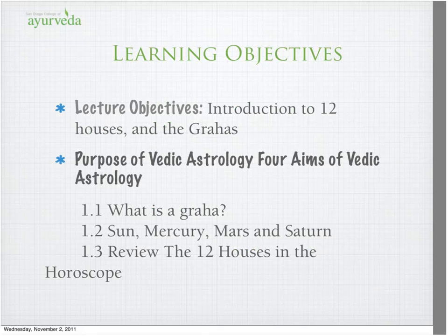Our learning objectives today are introducing some of the planets — the grahas — not all of them. I'm going to slow down just a little so that you can assimilate and think about how the energies operate and start noticing how these energies are in your everyday life. We always consider the four aims of Vedic astrology: dharma, artha, kama, and moksha.